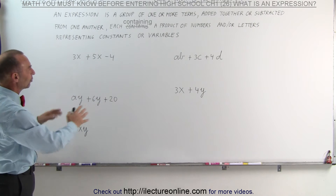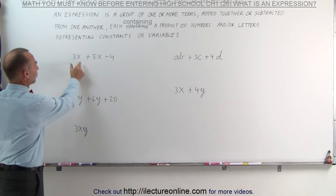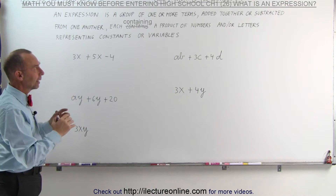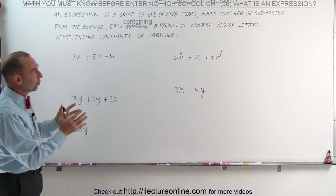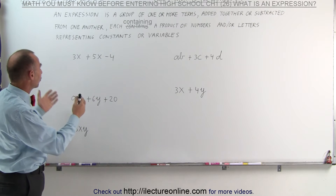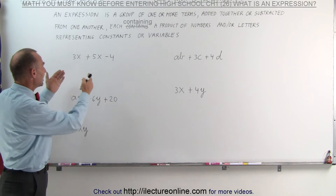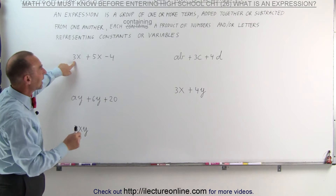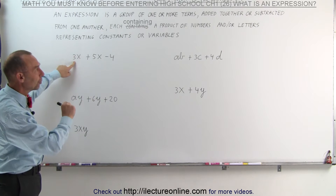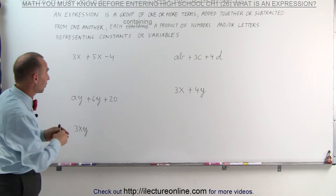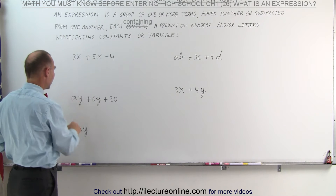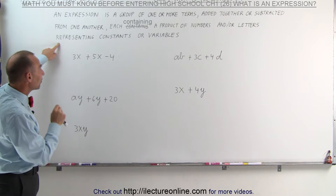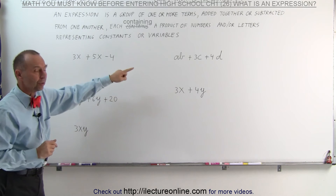Here we have some examples of groups of terms. This is a term, this is a term, this is a term. An expression is a summation or a difference of these terms — in other words, they can either be added or subtracted from one another. Each of these terms contains a product of numbers and/or letters. So here we have 3 times x, and here we have 8 times y.